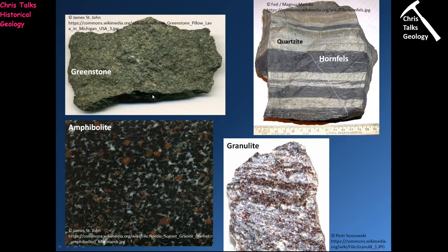A greenstone has a distinct green colour due to the presence of chlorite, actinolite, and epidote - all green minerals. As pressure and temperature increase, these become unstable and are replaced by hornblende (black), plagioclase (white), and garnet (red), giving us an amphibolite. Increasing further, the amphibole becomes unstable and changes into pyroxene, entering granulite facies. This granulite shows a light foliation with red-brown bands of garnet and pyroxene, and lighter regions dominated by quartz and feldspars.